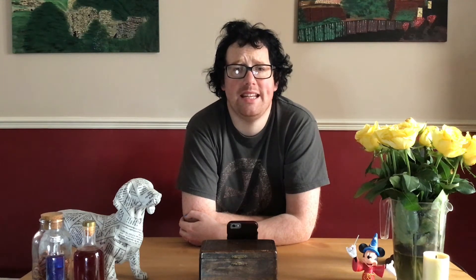A famous example is Tolkien's Middle Earth map, where we can see the main and most famous chain, the Misty Mountains, running from north to south. There are, of course, exceptions to this, but most long chains do run in that north-to-south orientation.